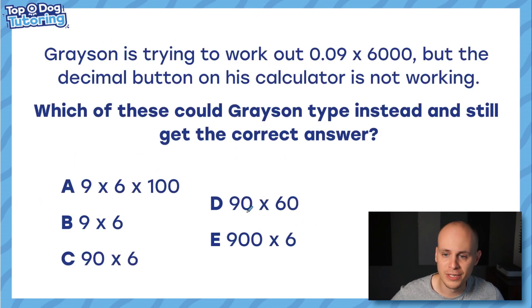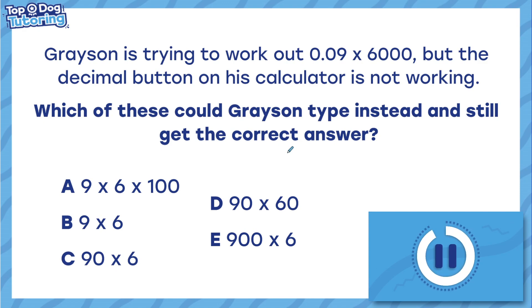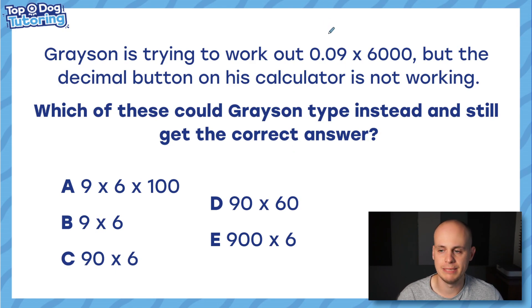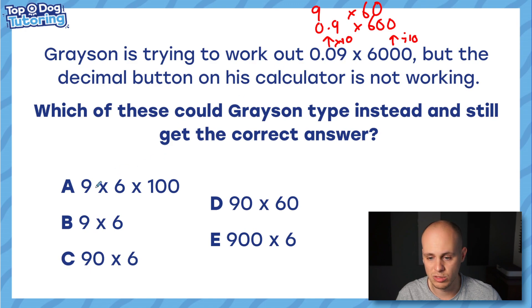Let's try this question and then I'm going to leave you with a question. Pretty cool one—we're going to really put everything into practice now. Let me read it to you. Grayson is trying to work out 0.09 x 6,000, but the decimal button on his calculator is not working. Which of these could Grayson type instead and still get the correct answer to the calculation that he wants to solve? Using my logic, if I times this factor by 10 but I divide this factor by 10, I know that the answer won't change. So it would be the same as doing 0.9 x 600, but that's still got a decimal, so let's go again. This would also be the same as doing 9 x 60. So there we go, that's something I could type in my calculator without using decimals, but that isn't an option here. However, the answer is C.